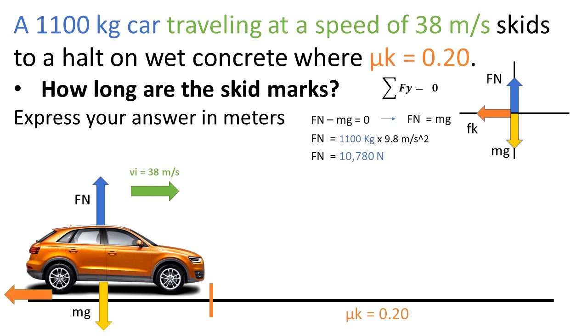Analyzing the forces in the x component, and assuming that there is no air resistance, we can see that the only unbalanced force is the force of kinetic friction. When the driver steps on the brakes, the wheels get locked, and there is kinetic friction in the opposite direction of the movement.